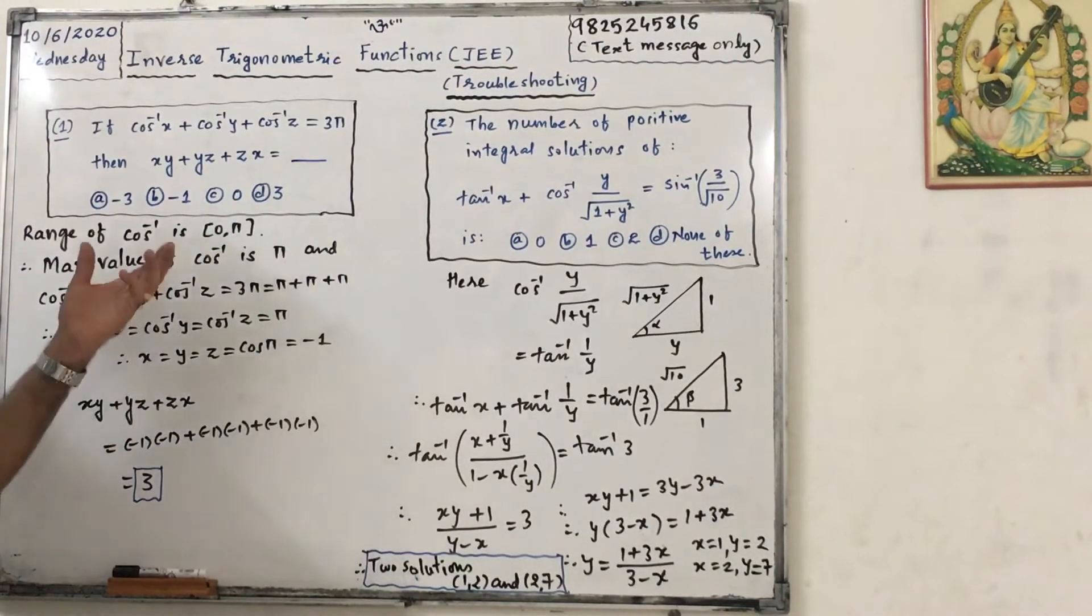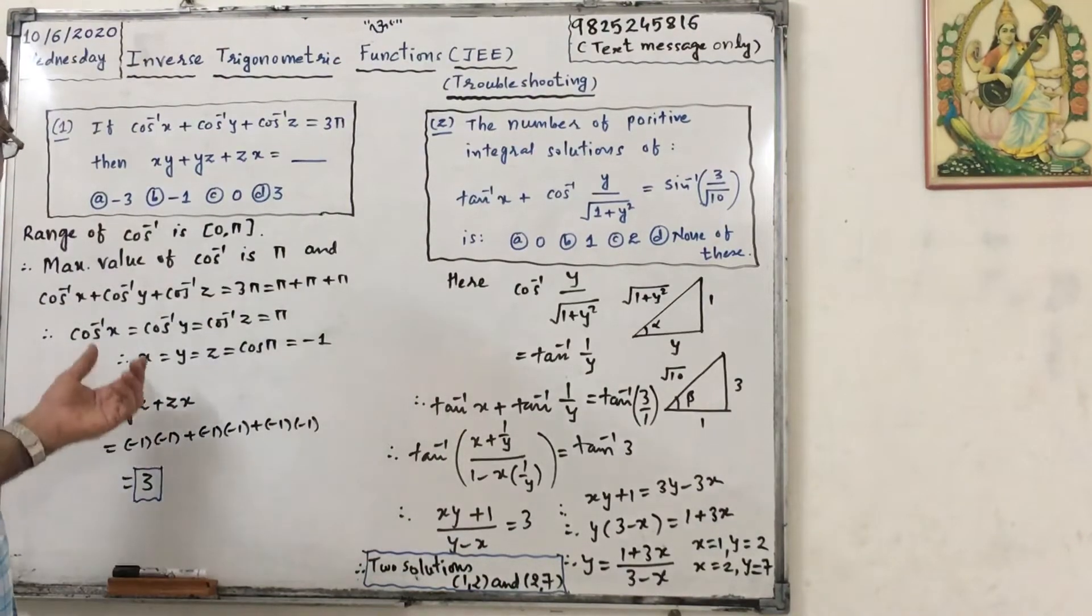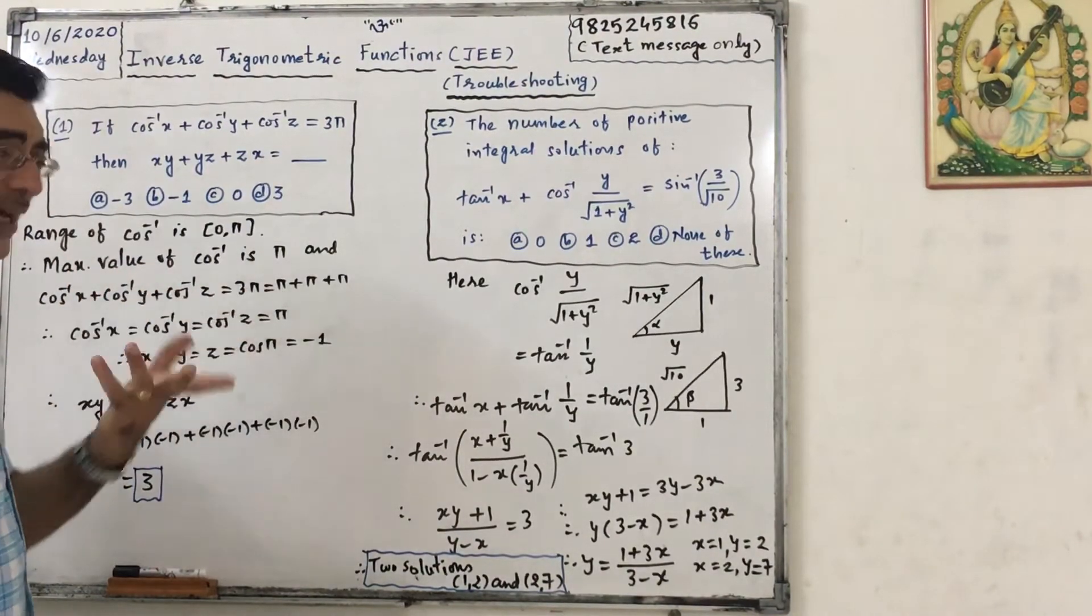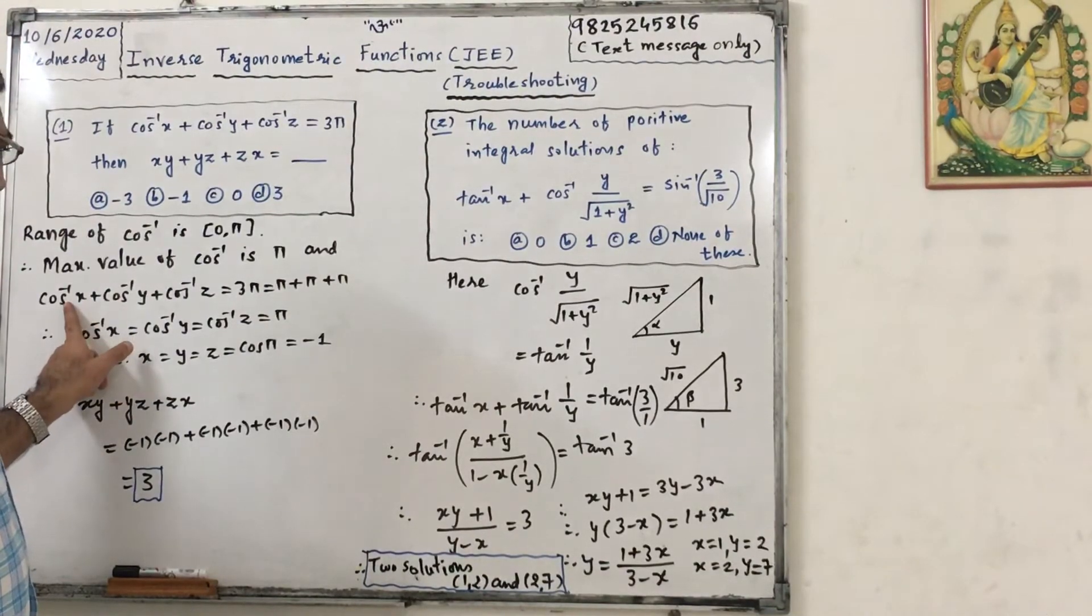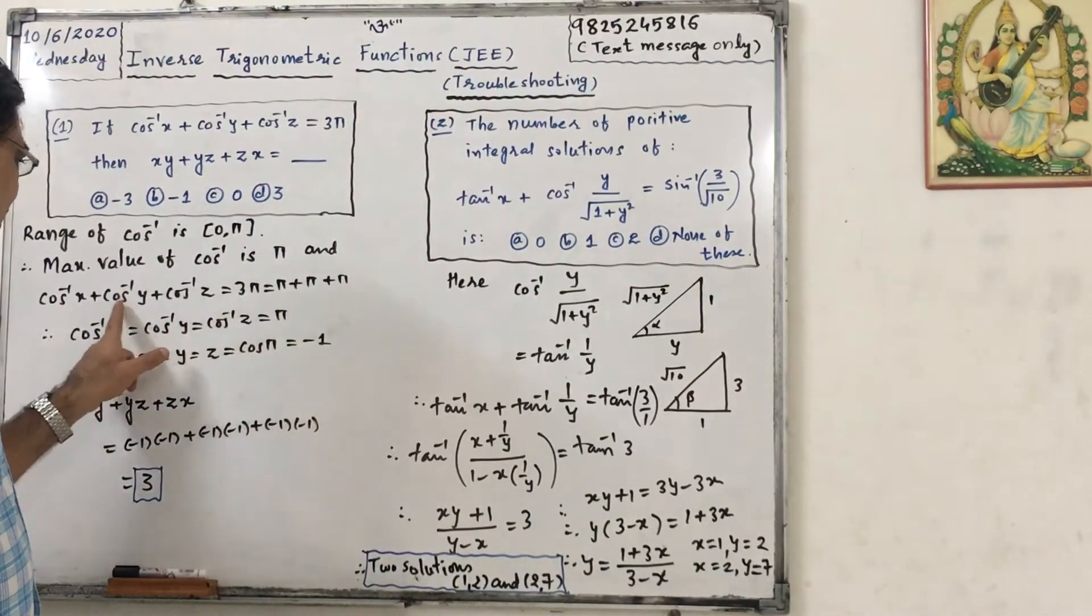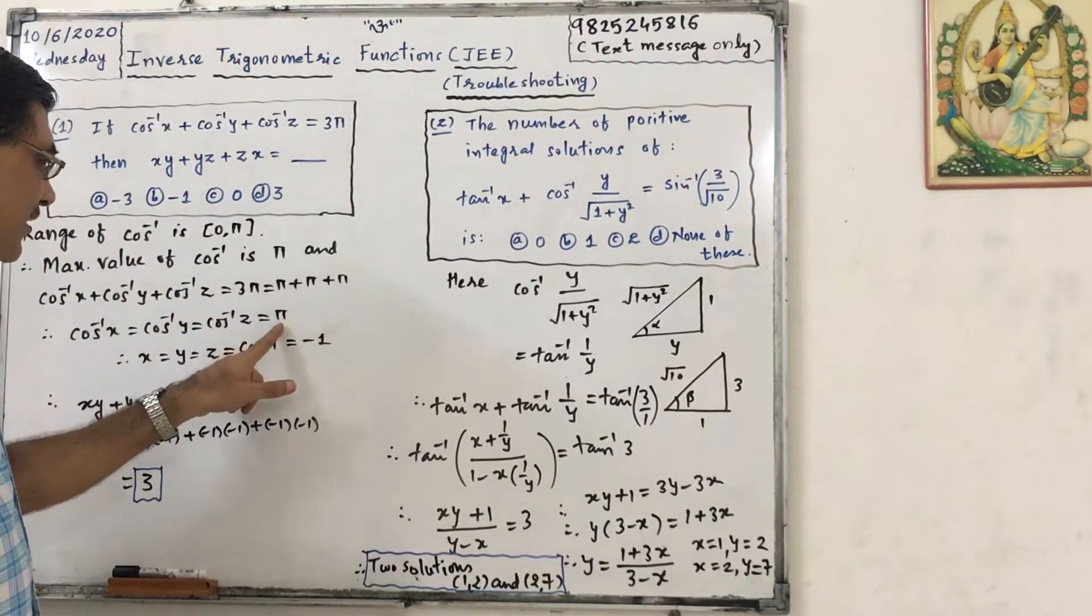Okay, so borders means 0 to pi, consider 0 once, consider pi once. Okay, so here we have considered pi and we got the LHS equals to RHS, that means cos inverse x equals to pi, cos inverse y equals to pi, cos inverse z equals to pi.